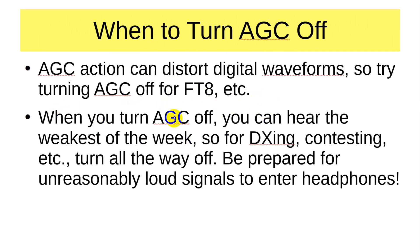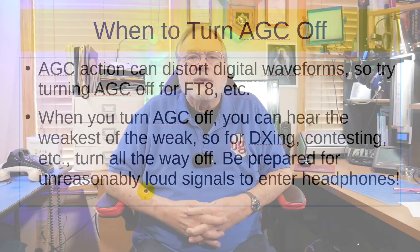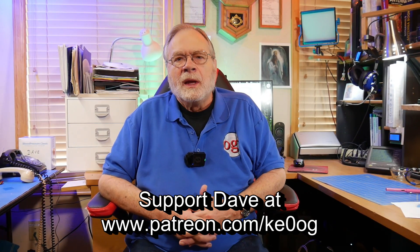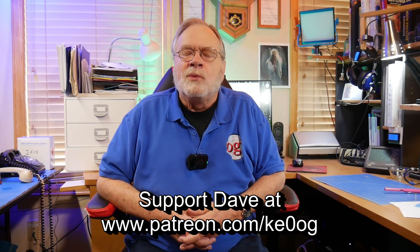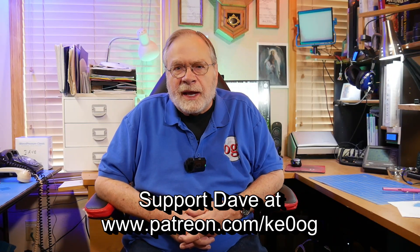When you turn the AGC off, you can hear the weakest of the weak. So for DXing, contesting, etc., you can turn it all the way off. However, be prepared for unreasonably loud signals in the headphones. The normal way to operate is to turn the RF gain all the way up, which means the AGC will control the RF gain. If you have a loud signal, it'll bring it down, and as it does, it increases the AGC voltage, which shows up on your S meter as a larger S unit reading.